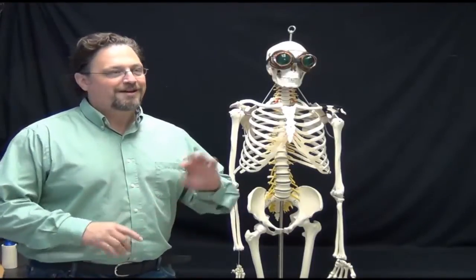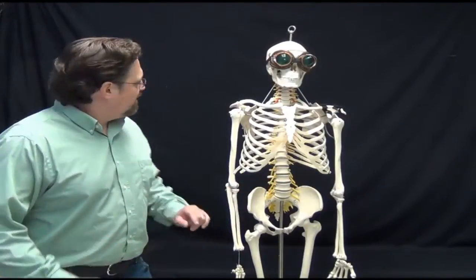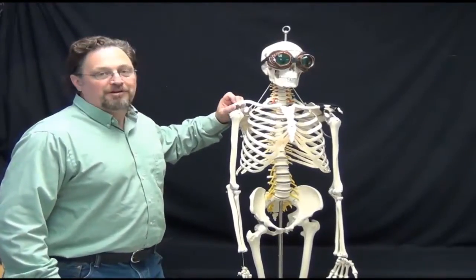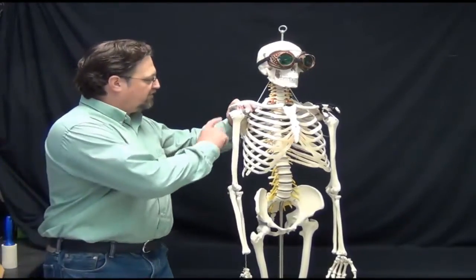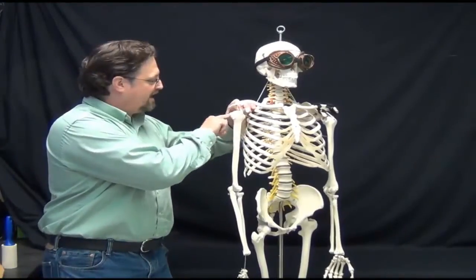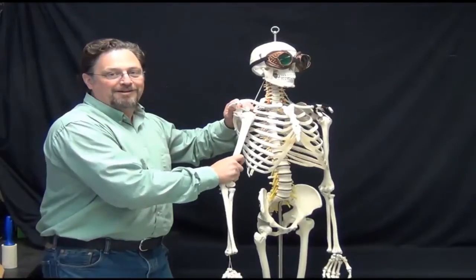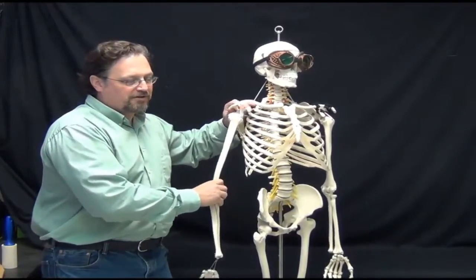Hey everybody, Dr. Ward here. I had a special request to discuss shoulder dislocations. I talked about shoulder separations in another video. That's where the clavicle and the acromion separate from each other. The shoulder dislocation involves the glenoid cavity and the head of the humerus coming apart in one way or another. So that's what we're going to talk about today.